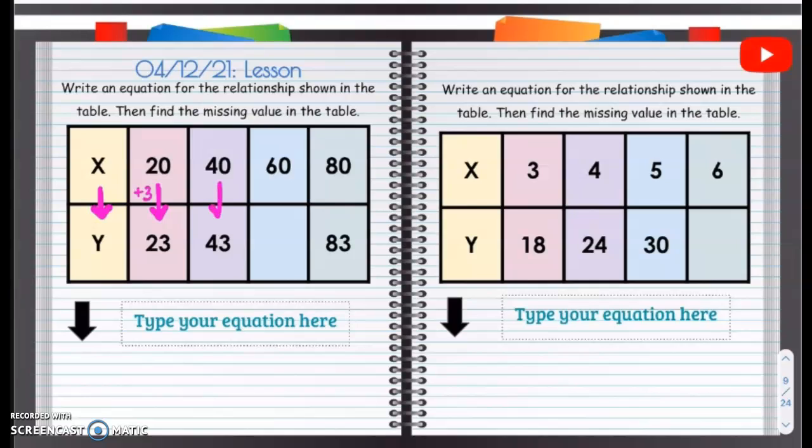I add 3. How do I get from 40 to 43? I add 3. 80 to 83? I add 3. So guess what? Our equation is going to be x plus 3 is going to equal whatever that y value is.